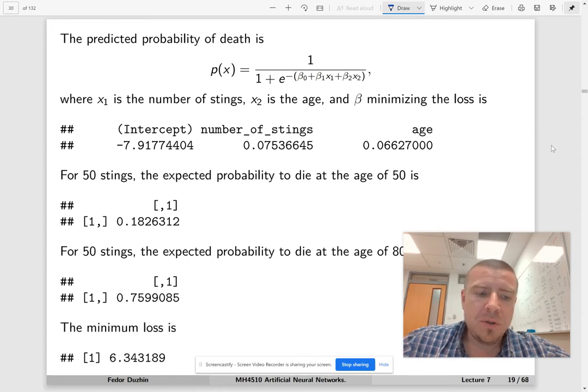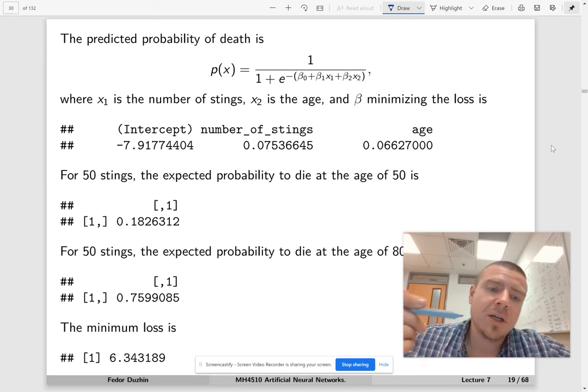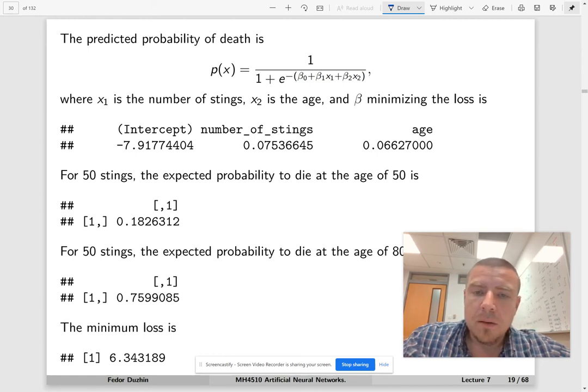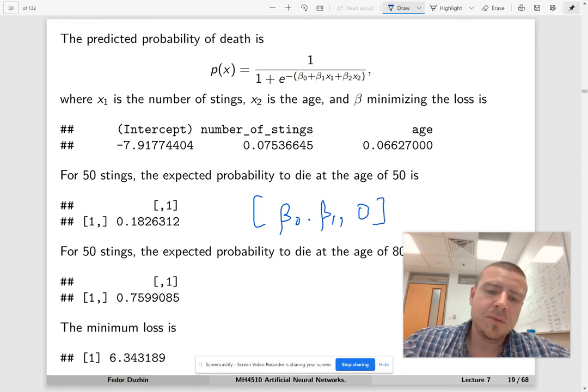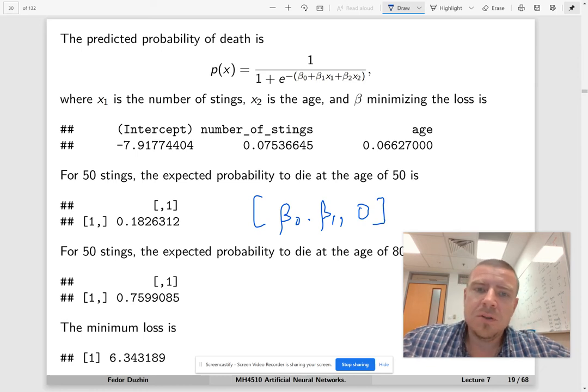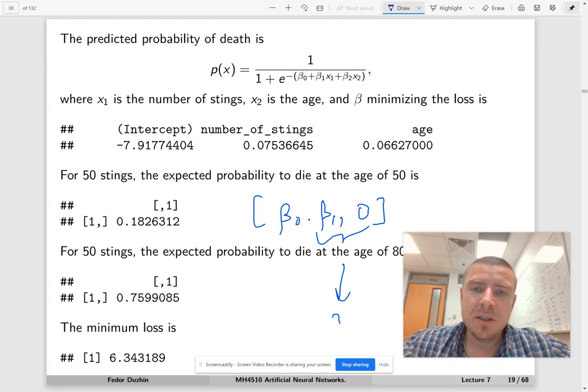Well, and the minimum loss function is going to be smaller than the minimum loss function for one variable. So because hypothetically, if we had some optimum, the value of beta 0 and beta 1 that minimizes the loss function when there is just one predictor, that by just inserting, letting the third variable to be zero, we can guarantee the same loss for two predictors. And by modifying it somehow, we will of course decrease the loss function. So the loss function with more predictors is always going to be smaller than the loss function with fewer predictors.